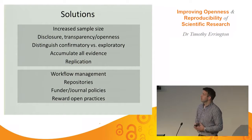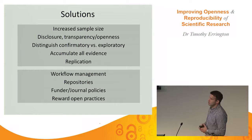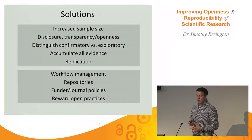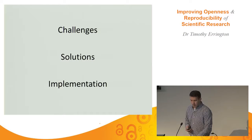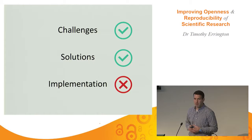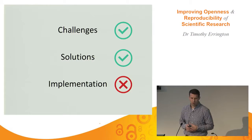There are solutions — you can probably think of them yourself: increase sample size, do more replication, distinguish confirmatory from exploratory, disclose, use repositories and workflow management, enact funder and journal policies, and reward open practices. But what is the actual barrier to doing that? We have challenges and solutions, but they're not being implemented. Why do we have ideas about how to make research more robust and open but aren't actually implementing them?